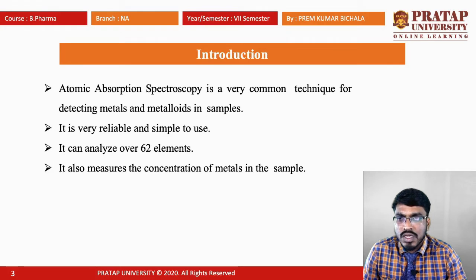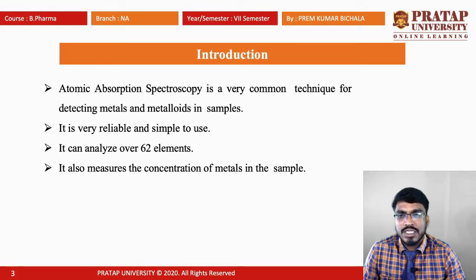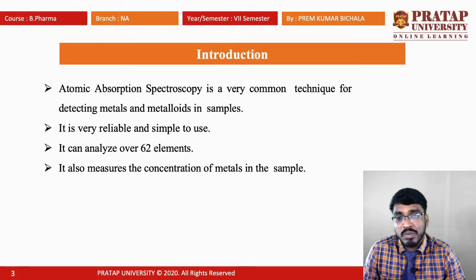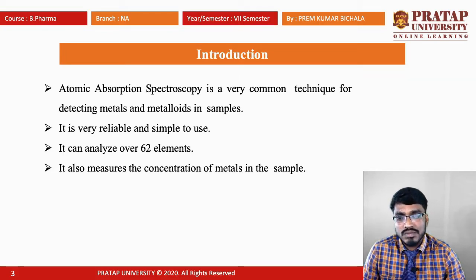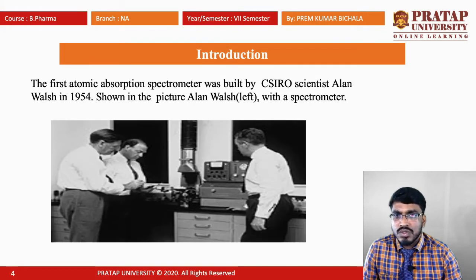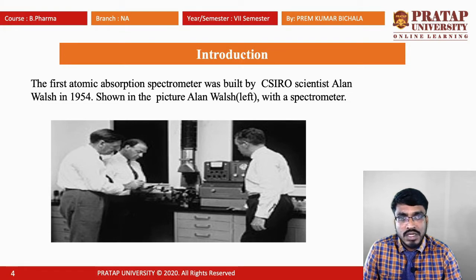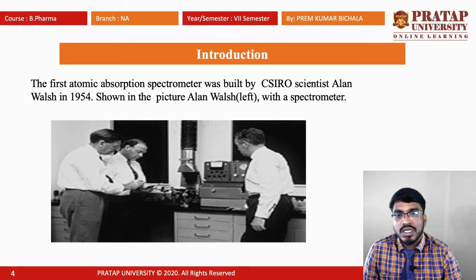Coming to introduction. Atomic absorption spectroscopy — simply we can call it AAS — is a very common technique for detecting metals and metalloids in samples. It is very reliable and simple to use. Mostly around 62 elements can be analyzed using AAS. Along with determination of elements, it also measures the concentration of metals in a given sample, either unknown or known. The first atomic absorption spectrometer was built by CSIRO scientist Alan Walsh in 1954. The following picture shows the instrument along with Alan Walsh.